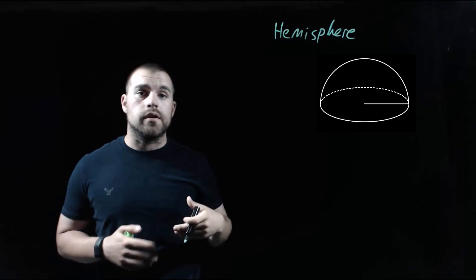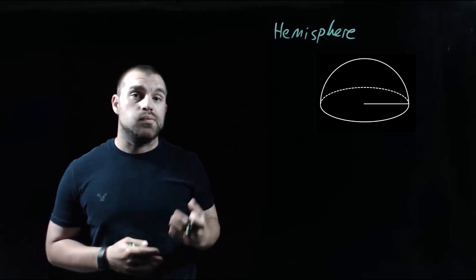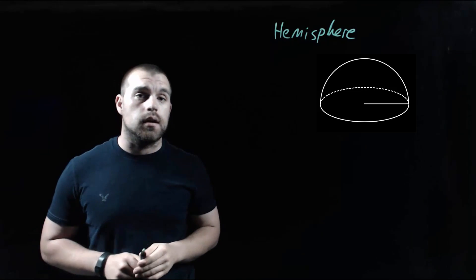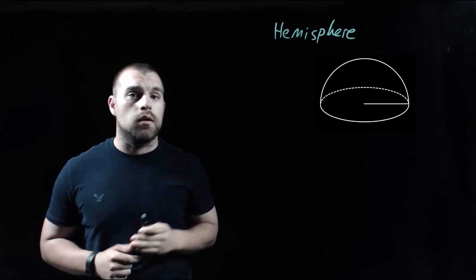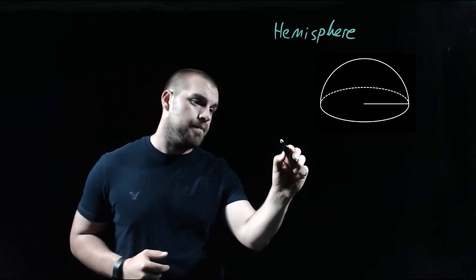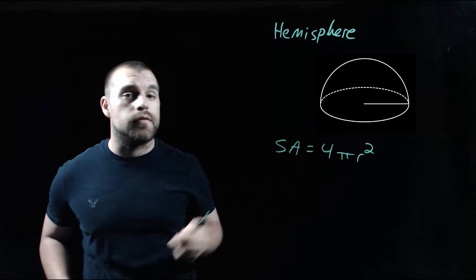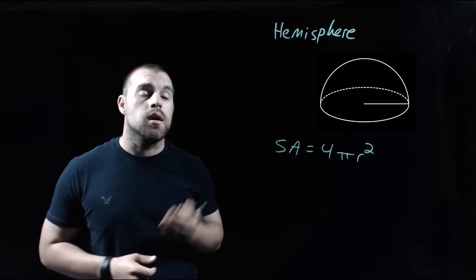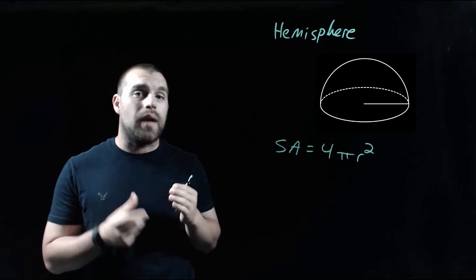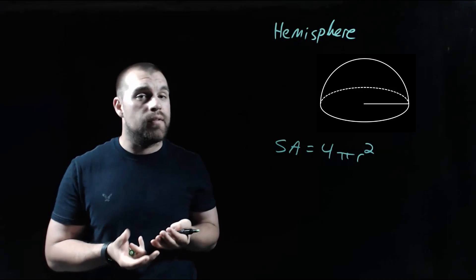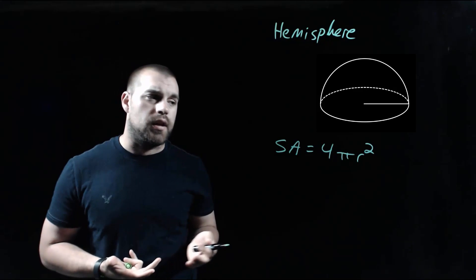Now we're going to shift gears a little bit and talk about a hemisphere. A hemisphere is just half of a sphere. As we're looking at finding the surface area of a hemisphere, I first want to look at the surface area of a whole sphere.